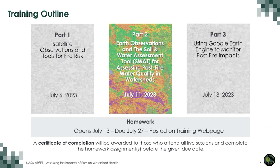Part 2 of the webinar series will be focusing on earth observations and the soil and water assessment tool for assessing post-fire water quality in watersheds. The homework will be available on the training web page starting July 13th, with the due date of July 27th. A certificate of completion will be awarded to those who attend all live sessions and complete the homework assignment before the given due date.